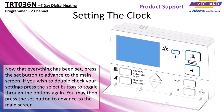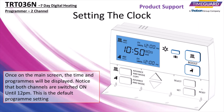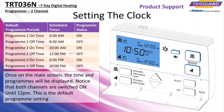Now that everything has been set, press the set button to advance to the main screen. If you wish to double check your settings, press the select button to toggle through the options again. You may then press the set button to advance to the main screen. Once on the main screen, the time and programs will be displayed. Notice that both channels are switched on until 12 pm. This is the default program setting.